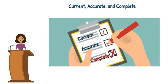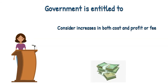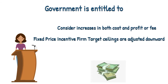When defective pricing occurs, the government is entitled to a price reduction to eliminate any significant overpricing related to the defective data. That reduction must consider increases in both cost and profit, or fee, related to the defective data. For fixed price incentive firm target contracts, the ceiling will also be adjusted downward. In addition to a price adjustment, the government is also entitled to interest on any overpayments that resulted from the defective pricing of supplies or services accepted by the government.